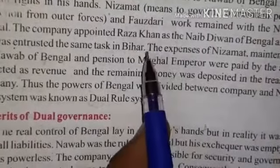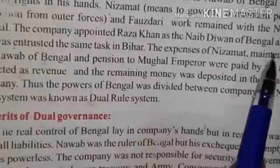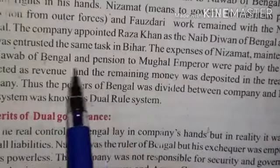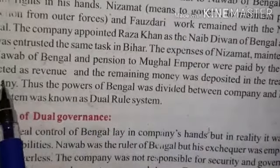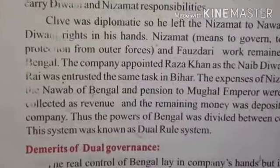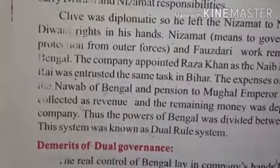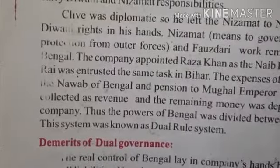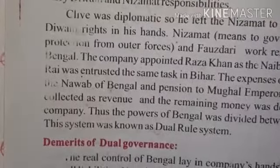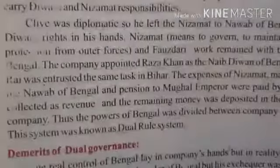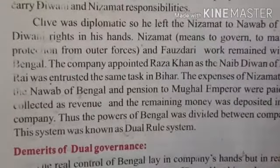The company appointed Raja Khan as the administrator of Bengal and Sitab Rai for the same task in Bihar. Expenses of Nizamat maintenance and the pension of the Mughal Emperor were paid, and the remaining money was deposited in the treasury. This arrangement between the company and local rulers is what is called dual rule.